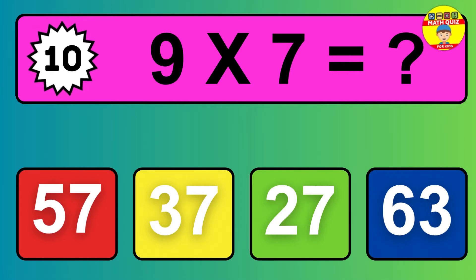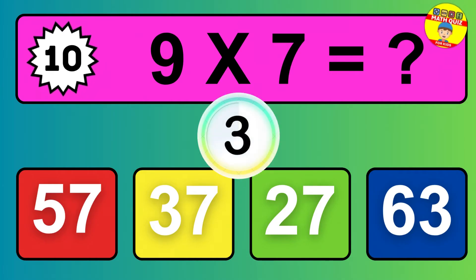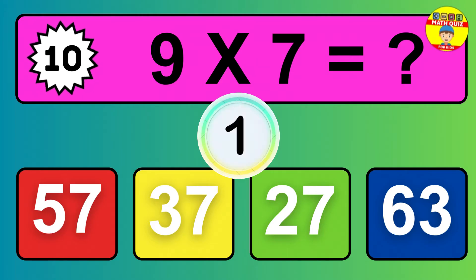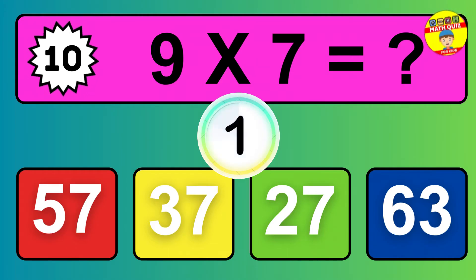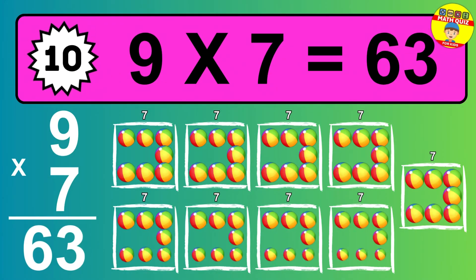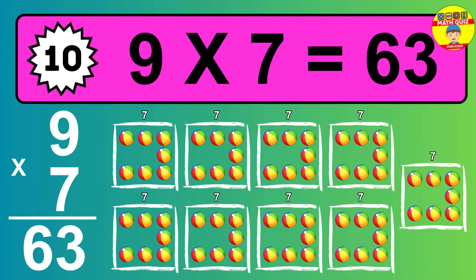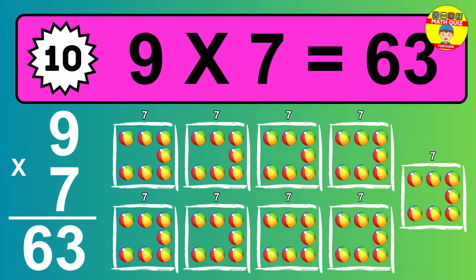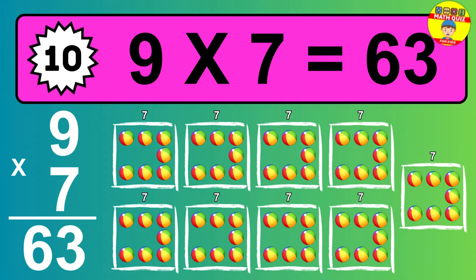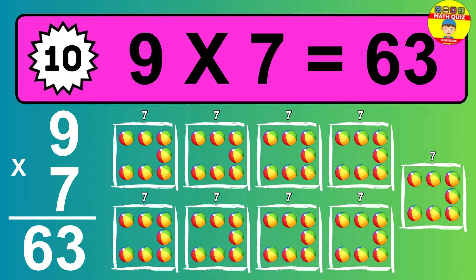Question 10. 9 times 7 equals what? The answer is 9 times 7 is 63. To calculate, we have 9 groups with 7 balls each one. So how many balls do we have? 63 balls.